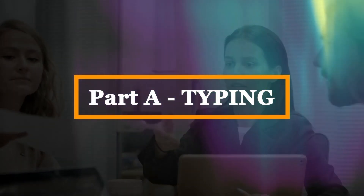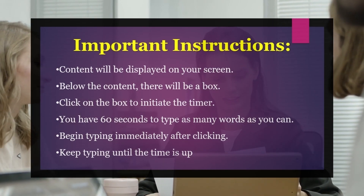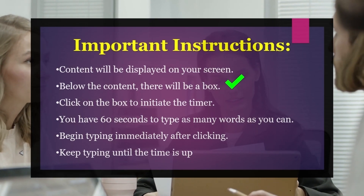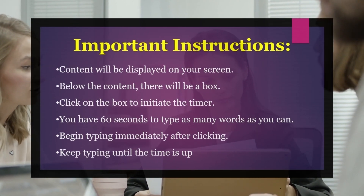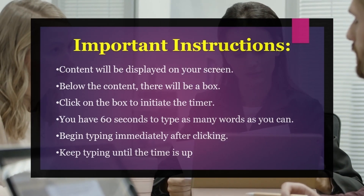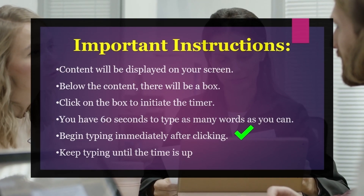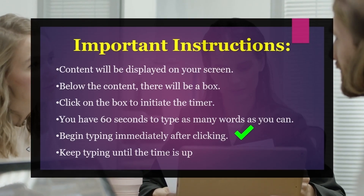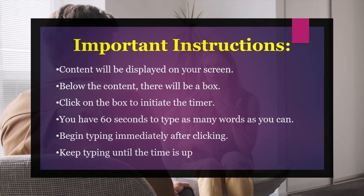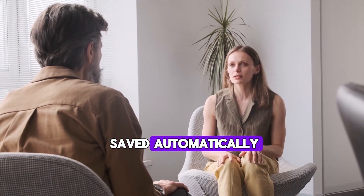Now let's move on to our first section, which is typing. As the name suggests, this section will measure your typing speed. You will see some content on your screen and just below that a box. You have to type the same content in that box. The moment you click on the box and type the first word, your one-minute timer will start. Within these 60 seconds, you will have to type as many words as you can. The idea should be to keep typing until the time is up, and your work will be saved automatically.